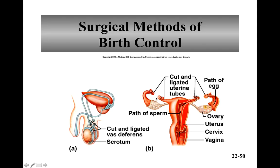Vasectomies are less invasive, done from the outside going through the scrotum. Tubal ligation is a surgery. So if a couple didn't want to have kids anymore, vasectomy would be the way to go — it's not as major a surgery and it's more reversible if you decide later you want more children.